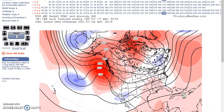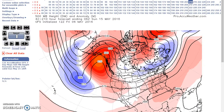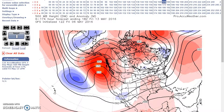A west-east precipitation axis is expected between the central plains and the Ohio Valley. An onshore flow into the west will result in above-normal temperatures and dry conditions. Now looking at the period from May 12th to 16th — here we are at the 13th, with above-normal heights here.